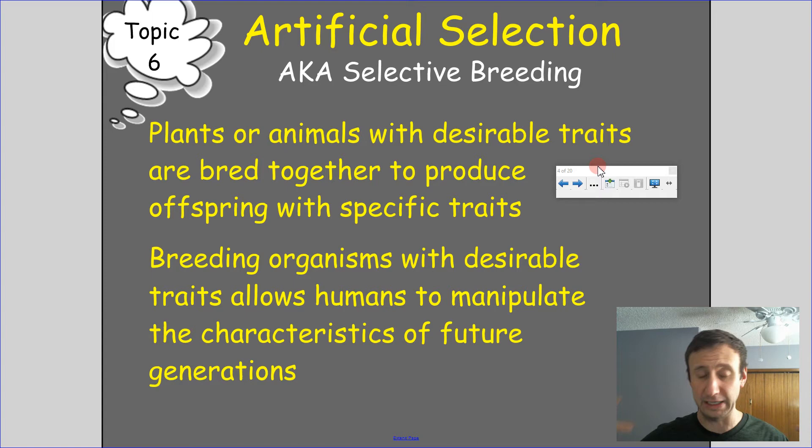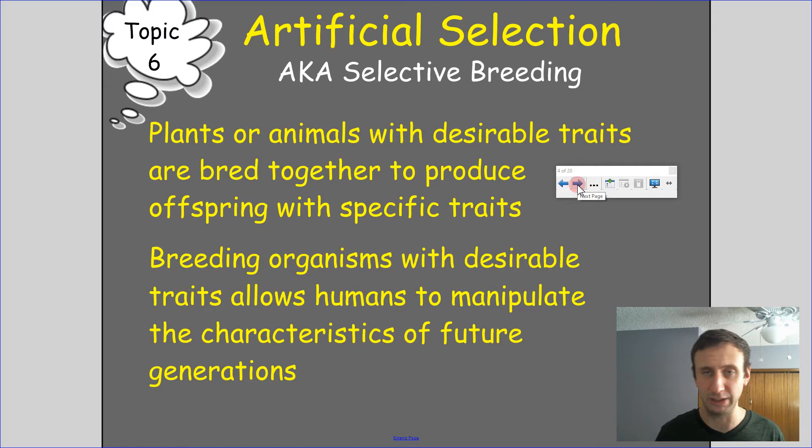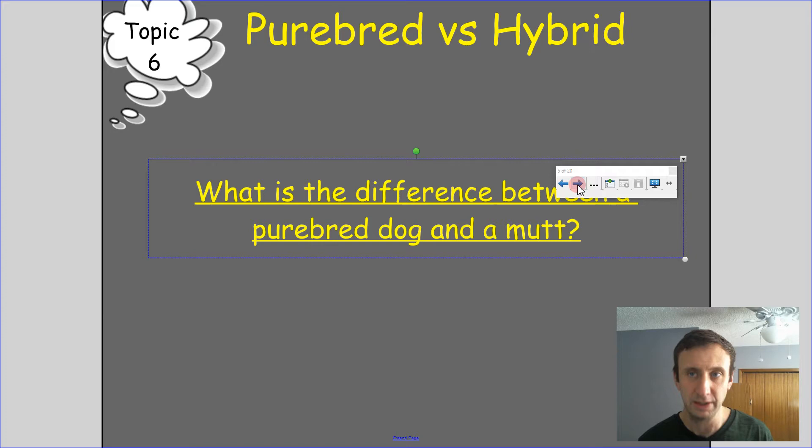It's not normal that these things would meet up in the wild in nature. Instead, we say this is going to mate with this, and we make sure it happens in order for those traits to continue. We prevent things that don't have the traits we want from breeding and passing on those traits.